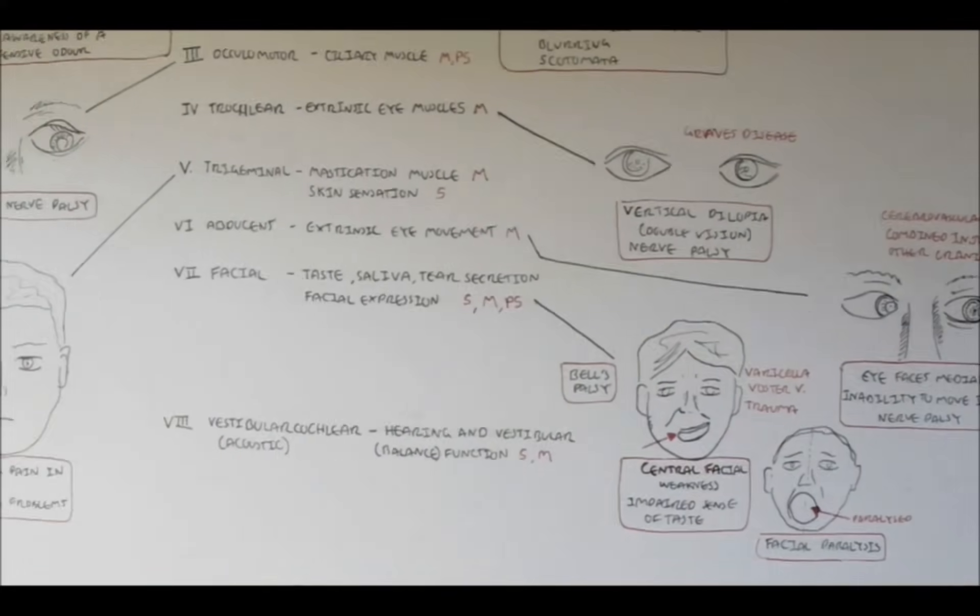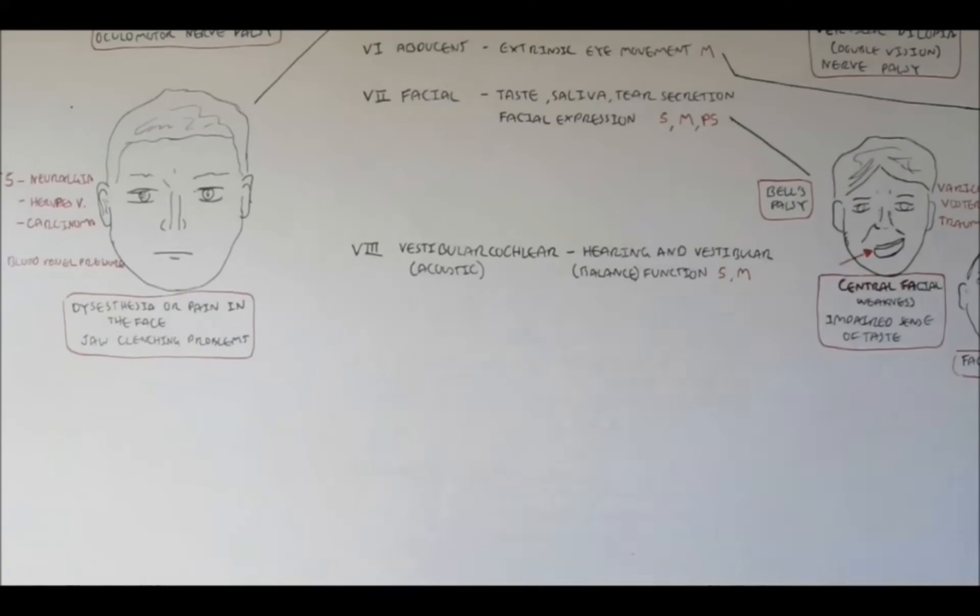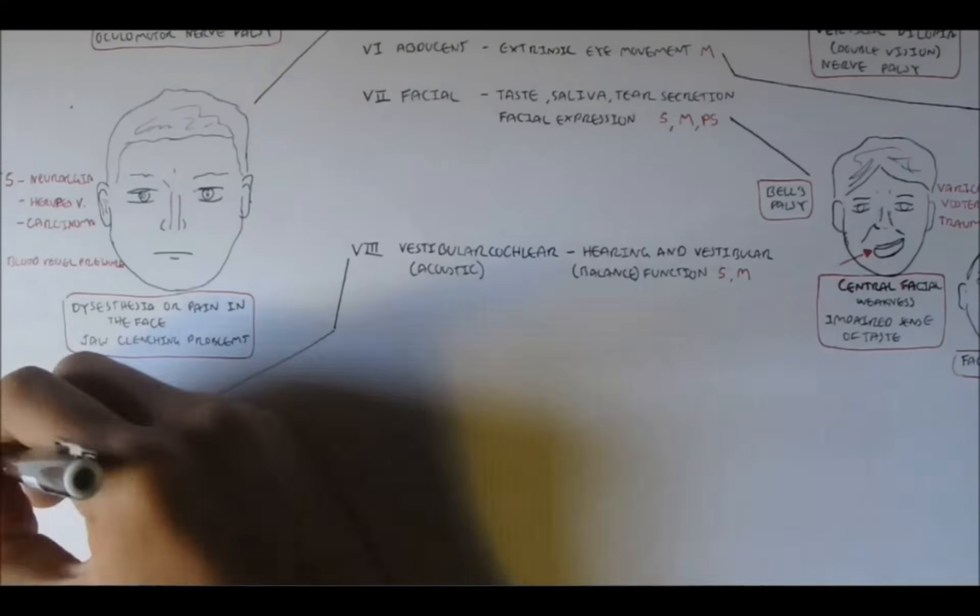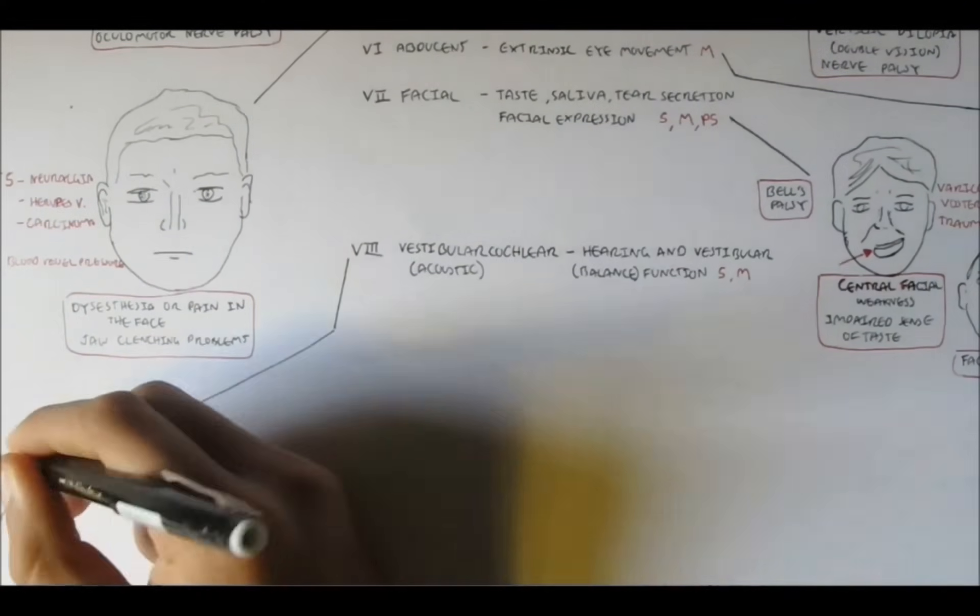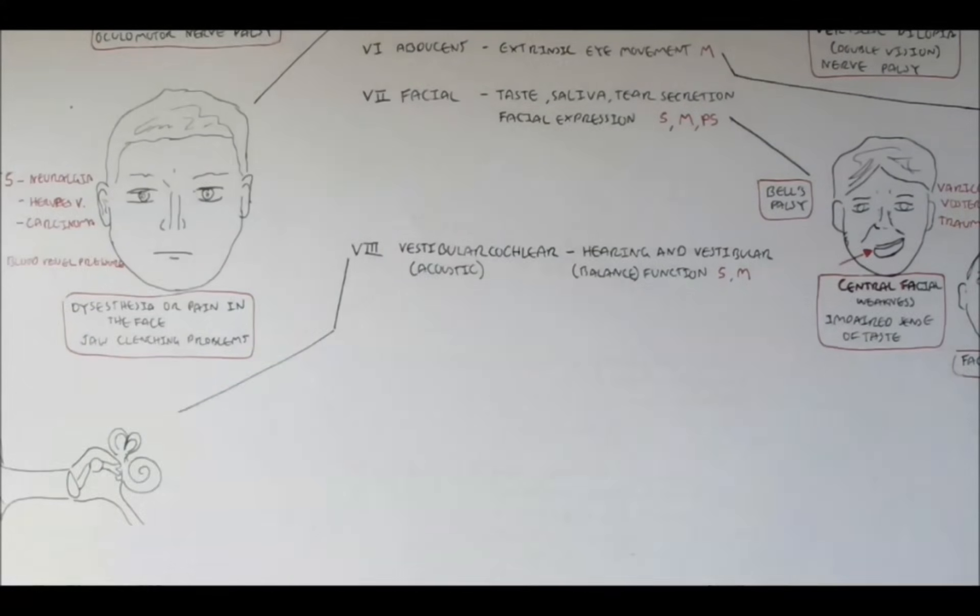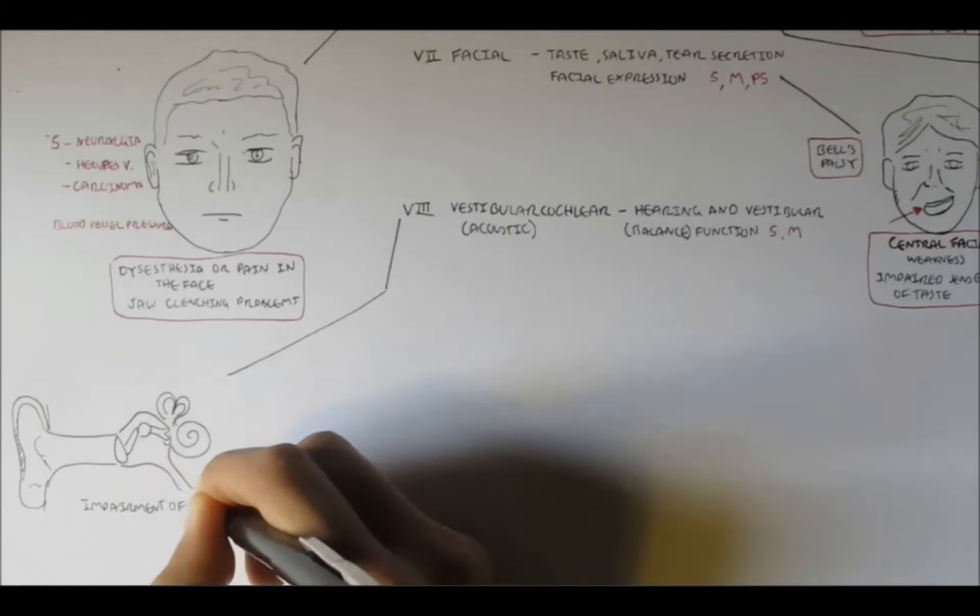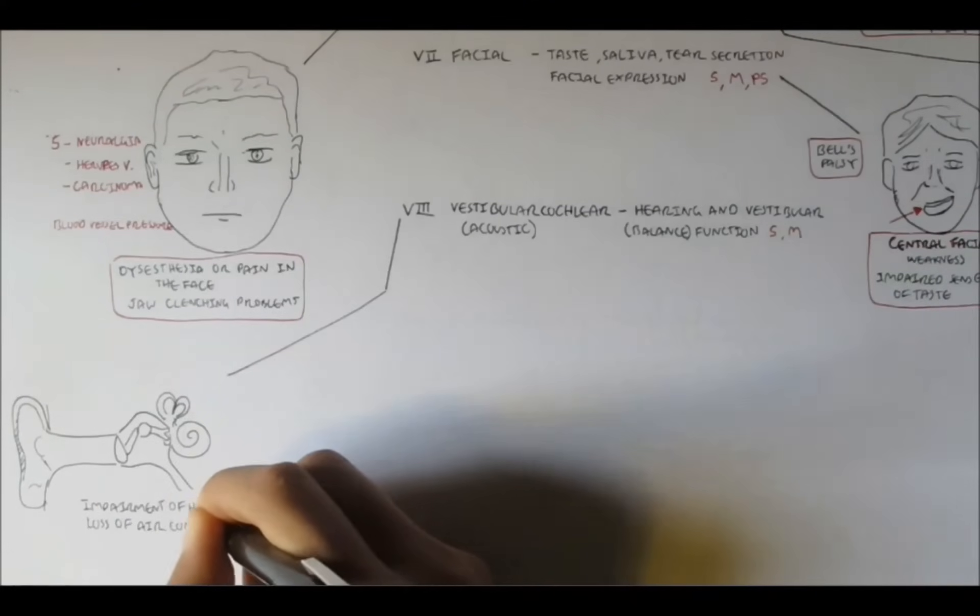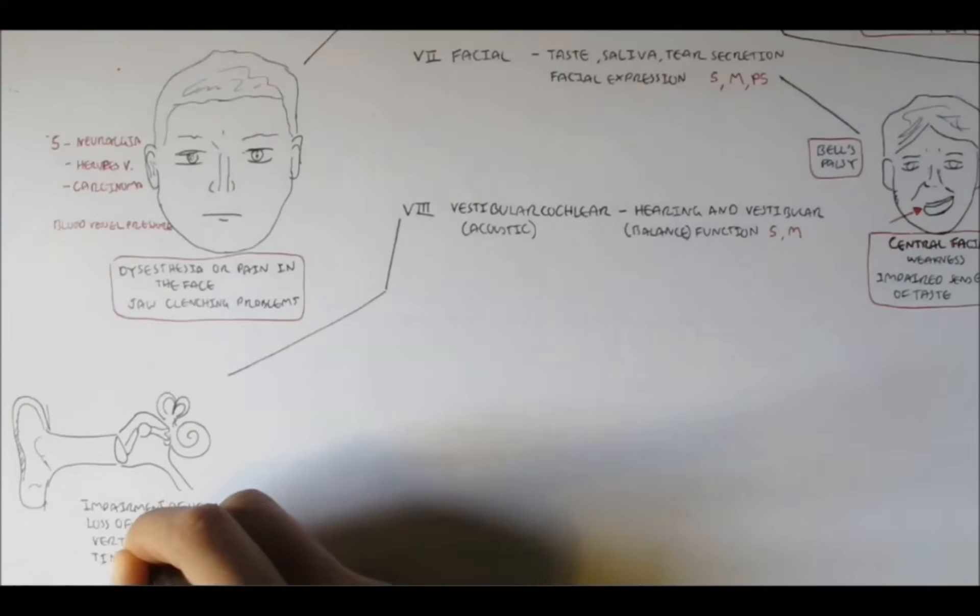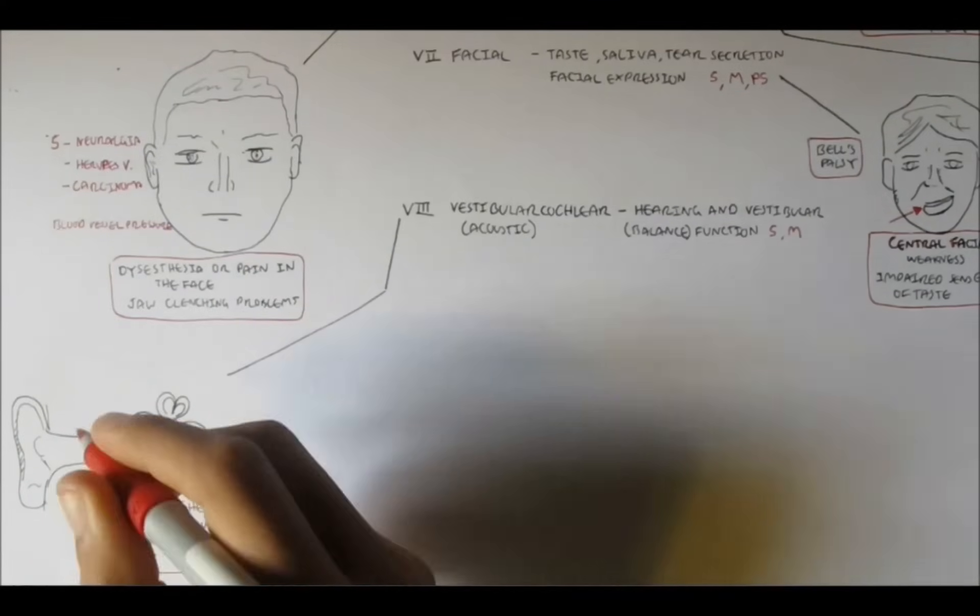Damage to this nerve damages our sense of hearing, but also because the vestibular function is also within this nerve, it also damages our balance, so we cannot balance properly, even when we walk. Damage to this nerve can cause impairment of hearing, loss of air conduction in the ear, vertigo, which is dizziness, and tinnitus, which is spinning head sensation when ear is blocked.